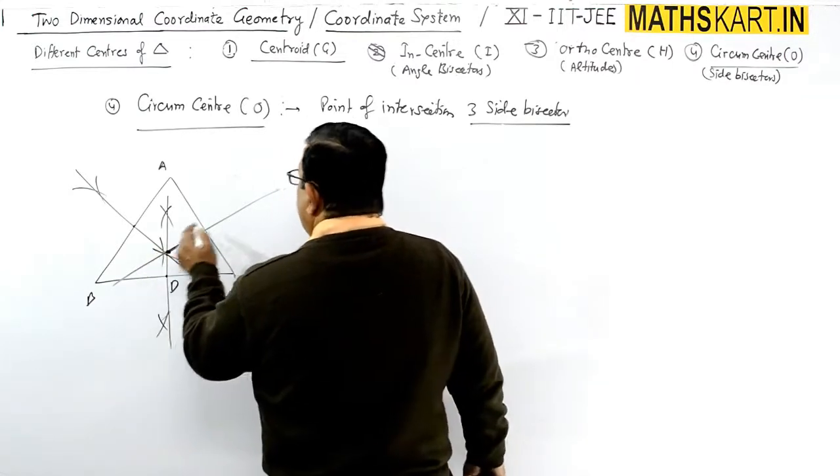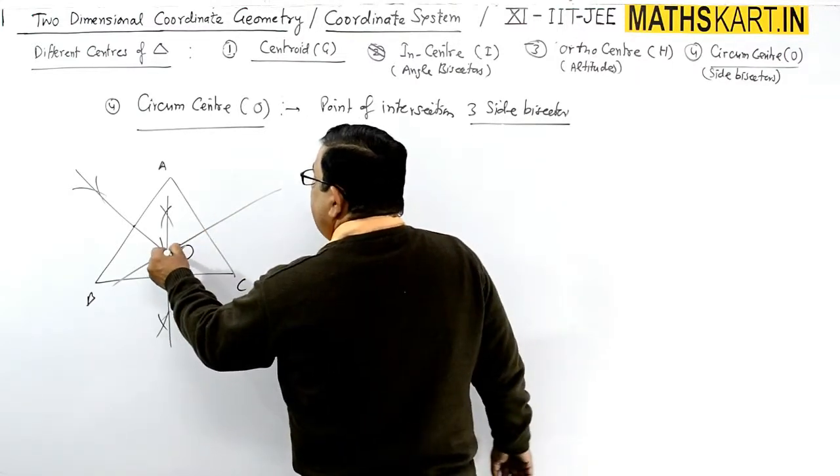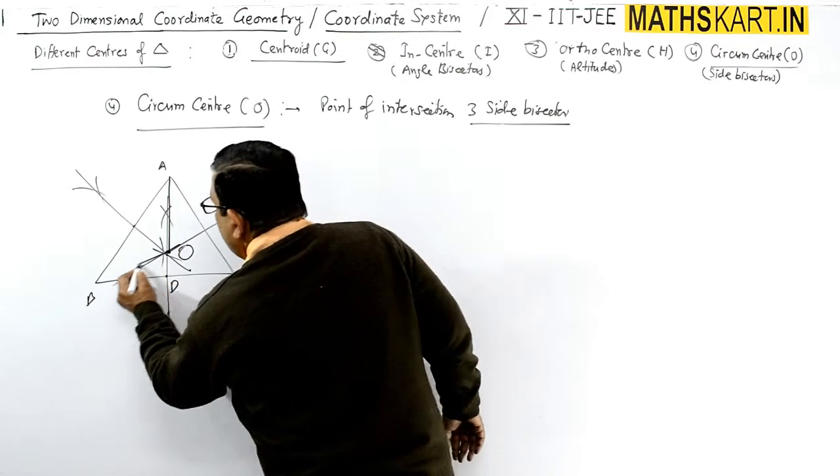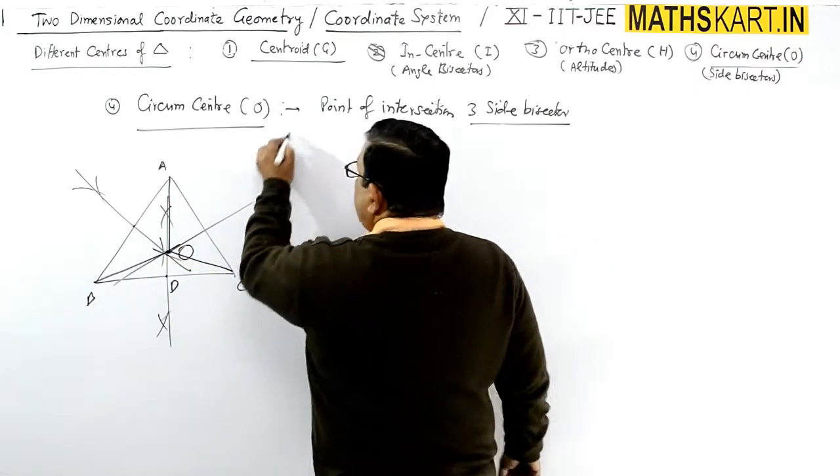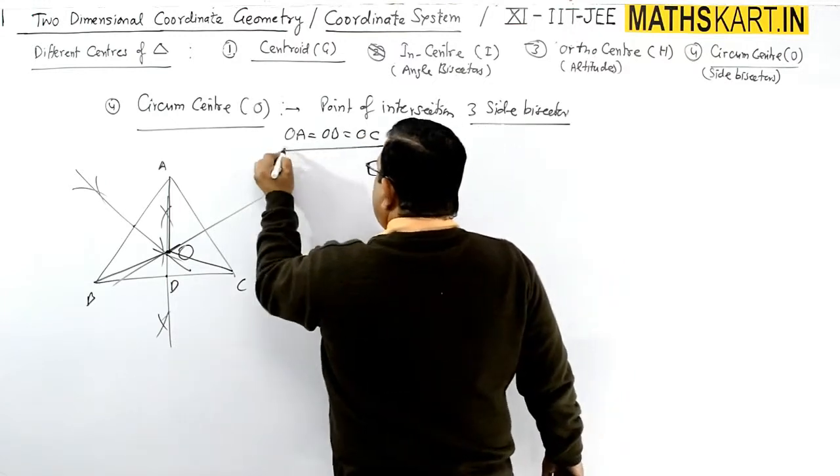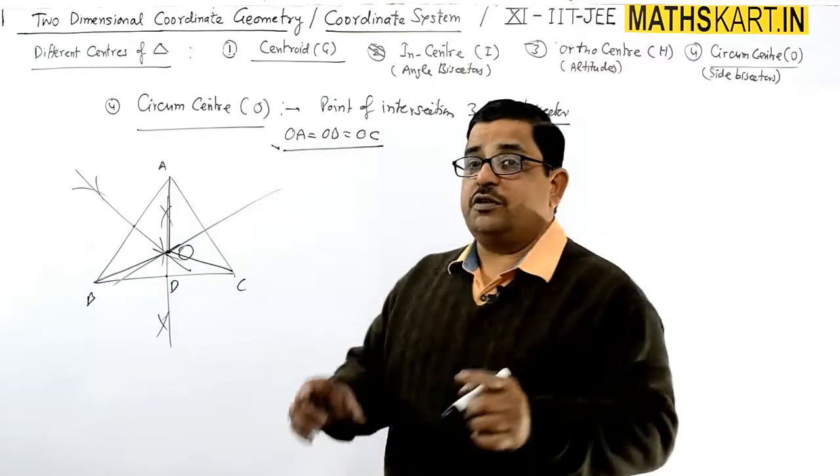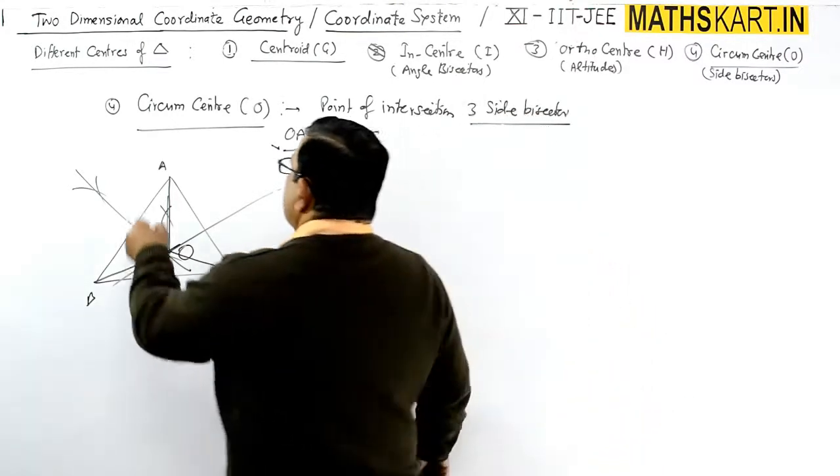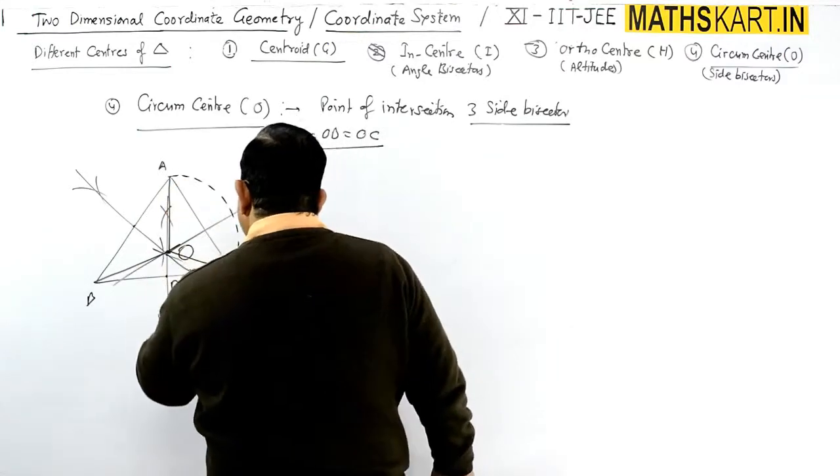What is important in this is that when you join these three vertices OA, OB, and OC, you get OA equals to OB equals to OC. And this is why we can draw one circumcircle there. That is known as the circumcircle.